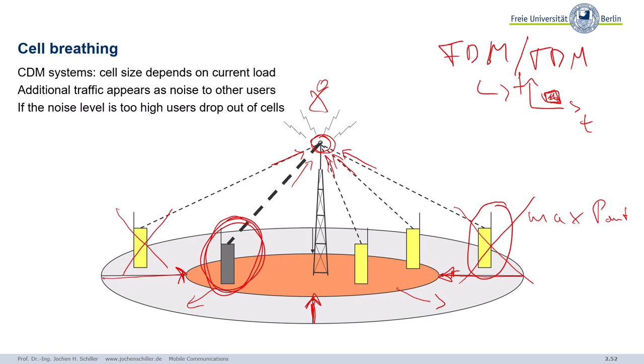Cell breathing is a typical effect of CDM systems, not FDM/TDM systems, because in FDM/TDM you have an exclusive part of the spectrum for a certain time with little interference between users. Cell breathing makes network planning really complex: you test your network and find full coverage in the city, but at peak hours users complain about no reception or bad connections. You test again in the evening and everything is fine. To avoid this you need more base stations in the city, but that is expensive.